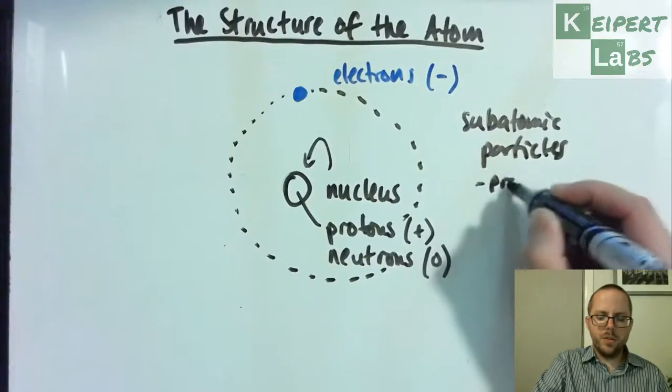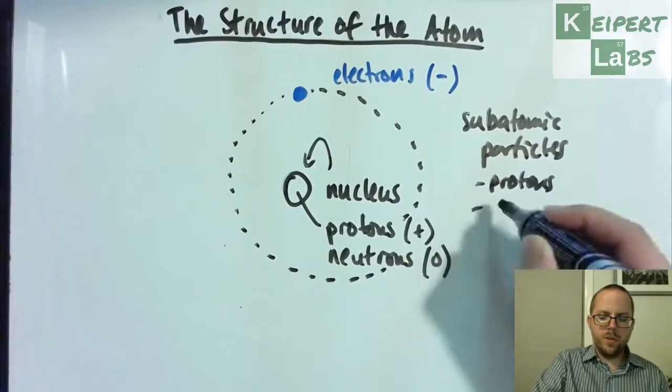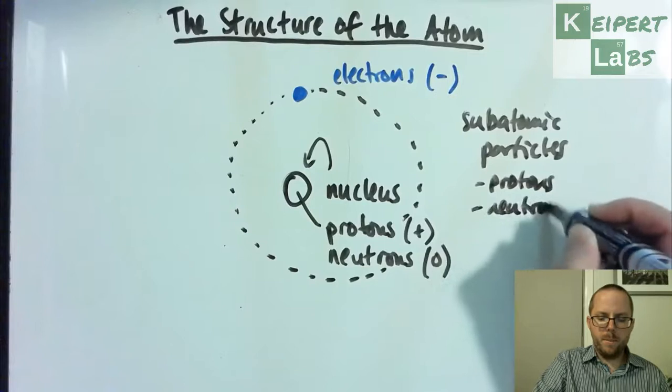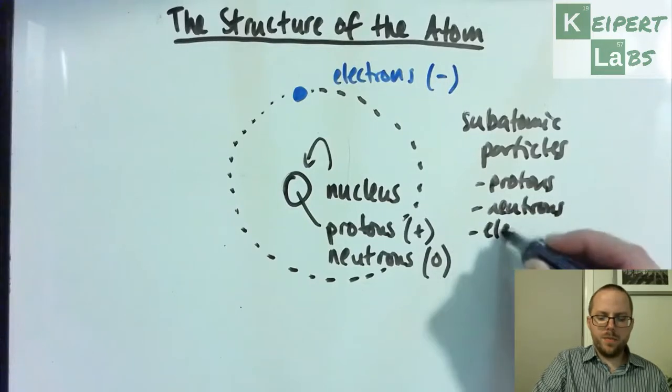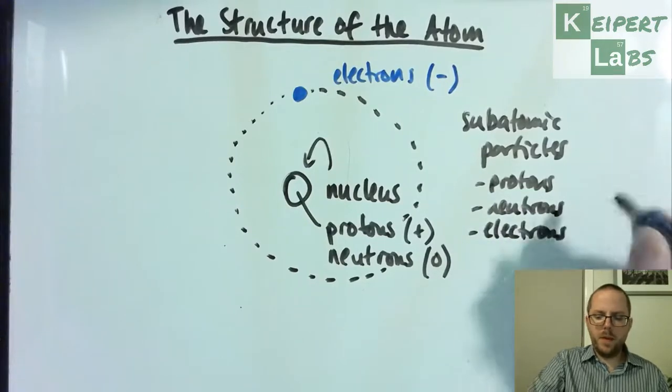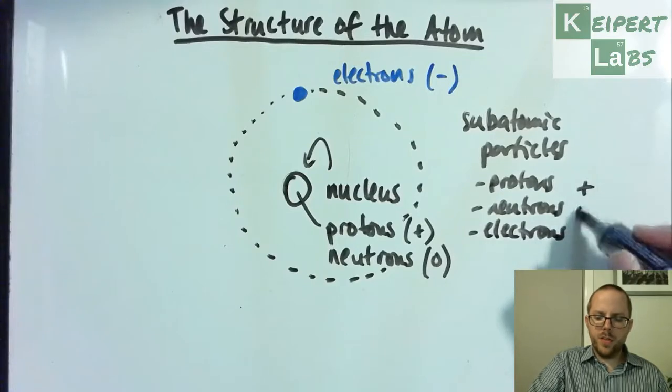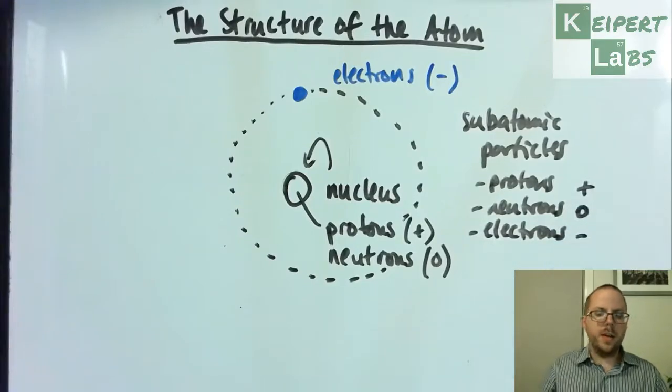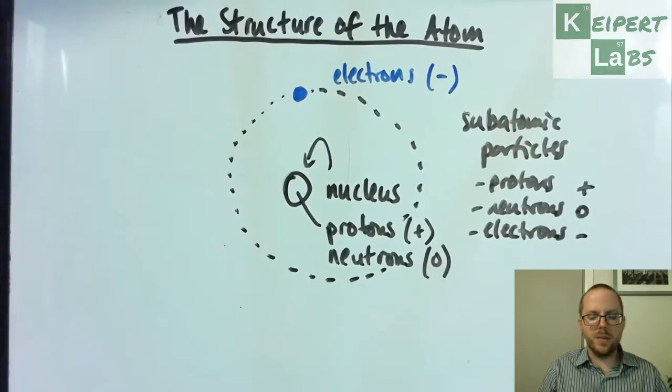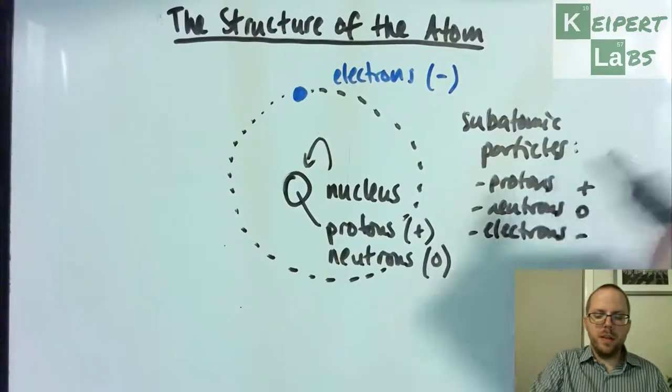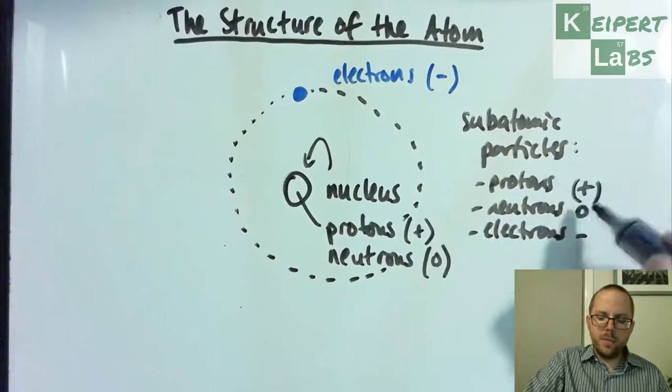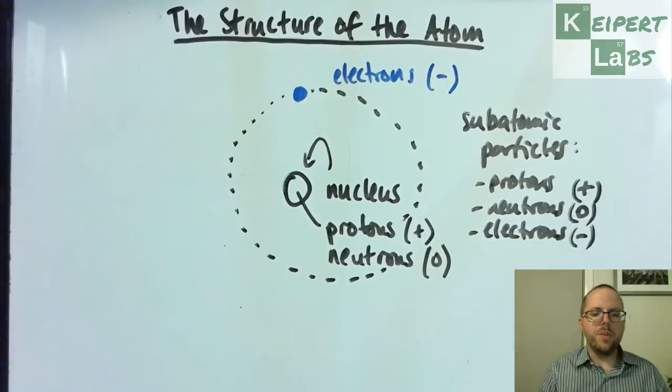So we've got protons, neutrons, and electrons. Protons are positive, neutrons are zero or neutral, and electrons are negative. Now I realize that's just transcribing some of the things from the diagram there, but just listing them to help you remember their names and where they are.